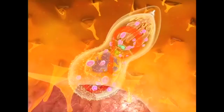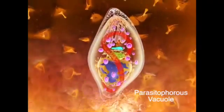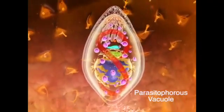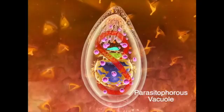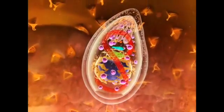During invasion, the toxoplasma is compressed, assuming an hourglass shape. Inside the host cell, it will remain inside a parasitophorous vacuole that protects it from lysosomal enzymes and from the immune system of the host organism.